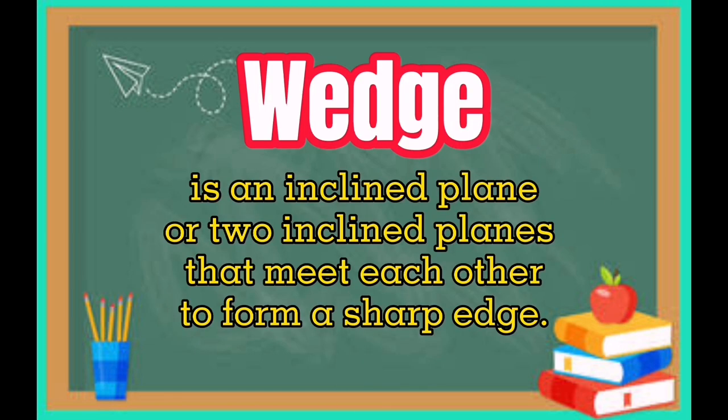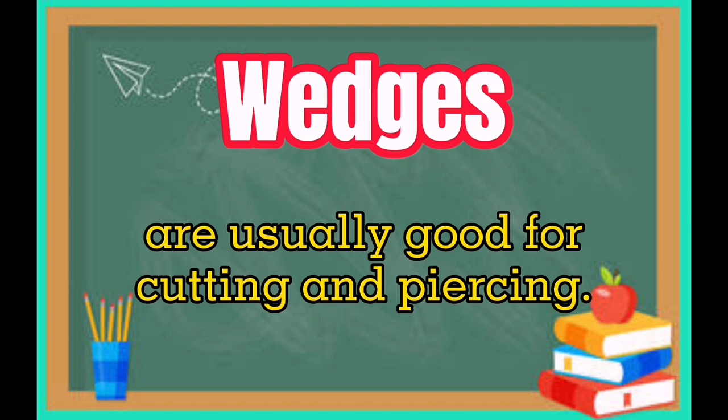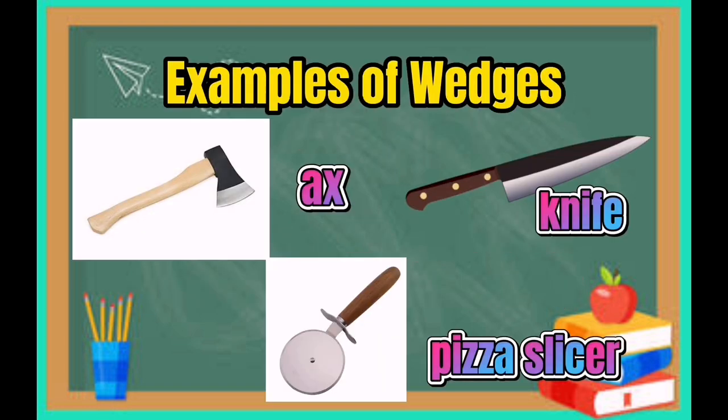Wedge. It is an inclined plane or two inclined planes that meet each other to form a sharp edge. Wedges are usually good for cutting and piercing. Examples of wedges are an axe, pizza slicer, and knife.